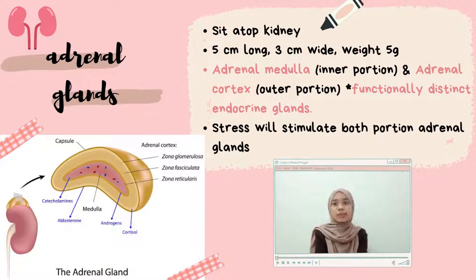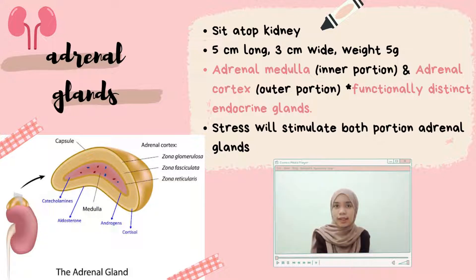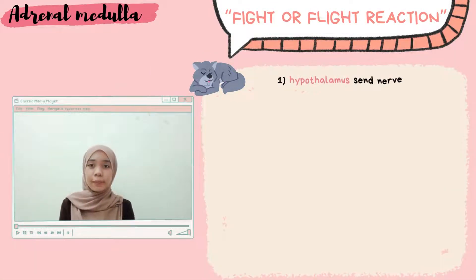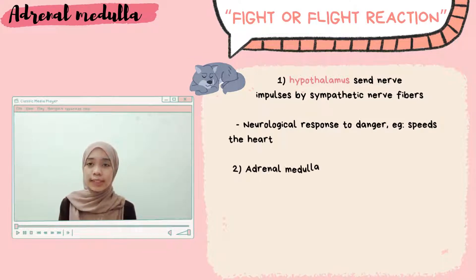The adrenal glands consist of an inner portion known as the adrenal medulla and an outer portion known as the adrenal cortex. Both are functionally distinct endocrine glands. Stress stimulates the adrenal glands; they send nerve impulses via sympathetic nerve fibers, producing a neurological response to danger.